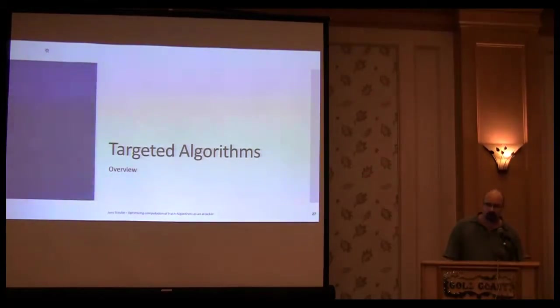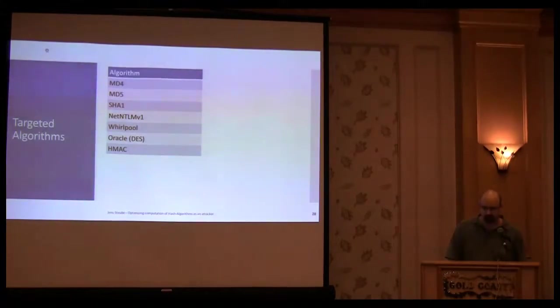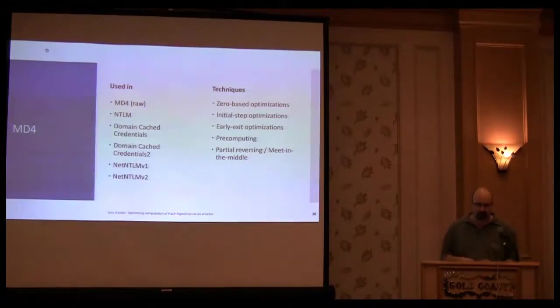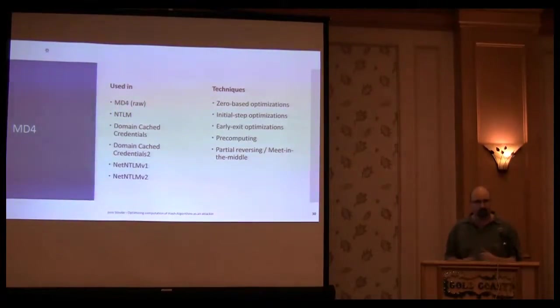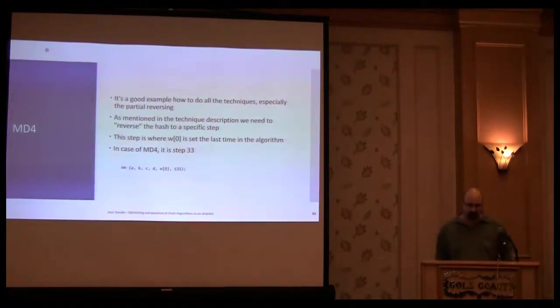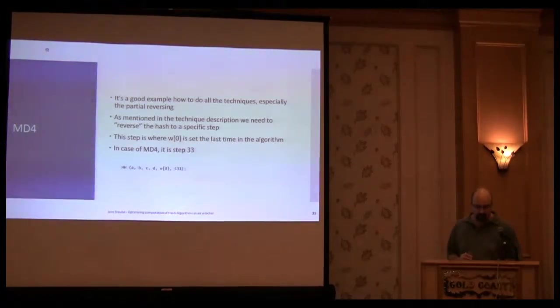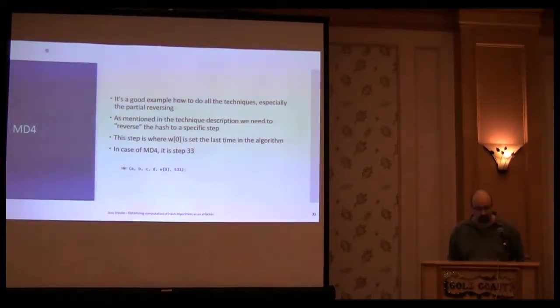These are the general techniques. Now I show you some of the known algorithms and how these techniques can be used in these algorithms. For example, MD4, which is used in a lot of algorithms, can be used with nearly all of these optimizations. This is one of the reasons why you can calculate NTLM hashes and MD4 that fast, like 15 billion hashes per second I think for AMD 7970. It's also a very good example to show how to do partition reversing. I will show you how to do this up to step 30 from 48.